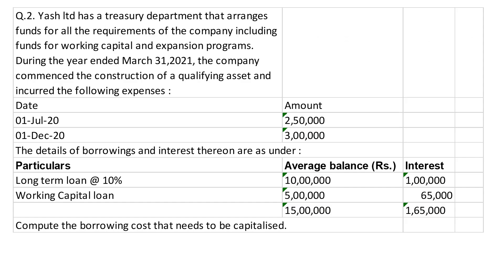This is your problem sum. Yesh Limited has a Treasury Department that arranges funds for all the requirements of the company, including funds for working capital and expansion program. During the year ended March 31st, 2021, the company commenced the construction of a qualifying asset and incurred the following expenses: on 1st July 2020, expenses of 2,50,000 and on 1st December 2020, expenses of 3,00,000.